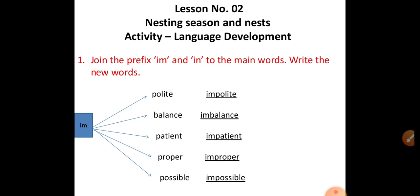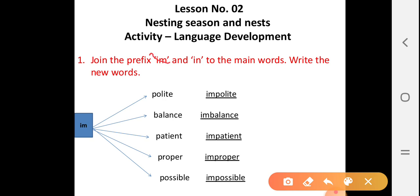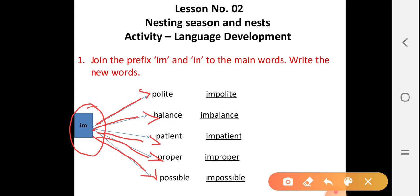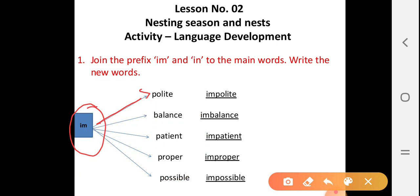Let us see the first question. Join the prefix 'im' and 'in' to the main words and write the new words. What we have to do in this question is, we have to join 'im' to all these words. After joining, we will get the answer. Let us start to join these words.